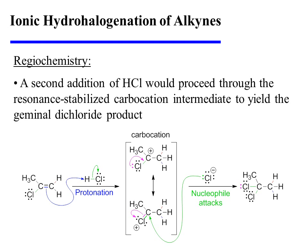If two equivalents of HCl are used, the second addition also proceeds with Markovnikov's selectivity. The remaining pi bond is protonated so as to yield only the resonance-stabilized carbocation, and it is that carbocation that attracts chloride. Therefore, we obtain the geminal dichloride in which the carbon of the vinyl chloride that had more protons to begin with has acquired the new proton during the reaction.